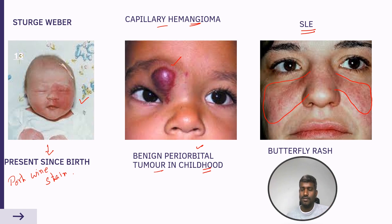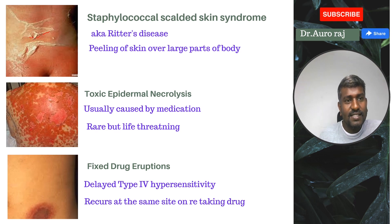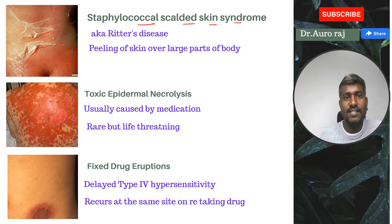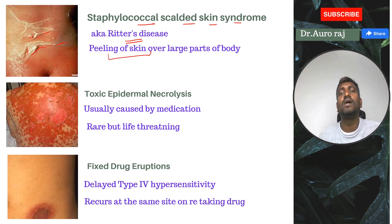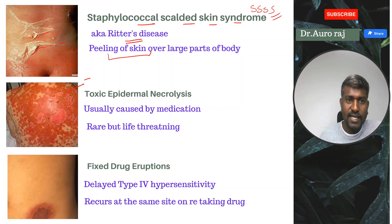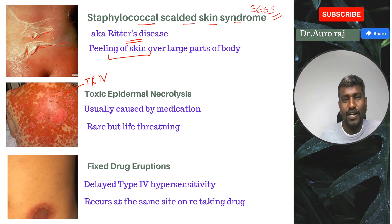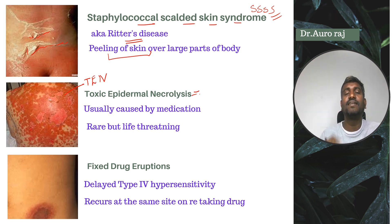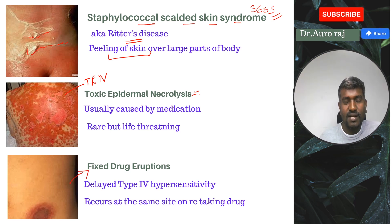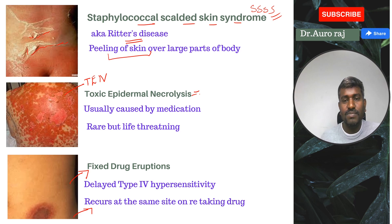The scalded skin images represent staphylococcal scalded skin syndrome, also known as Ritter's disease — peeling of skin over large parts of the body. The second image is toxic epidermal necrolysis, due to medications, a rare but life-threatening condition. The third image is fixed drug eruption, a delayed type 4 hypersensitivity reaction that reoccurs at the same site upon taking a particular drug.